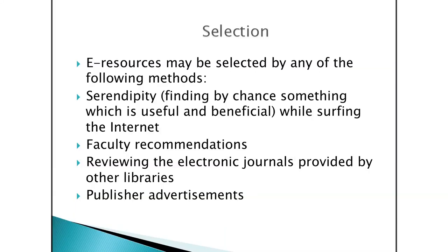How are we managing e-resources? The first point is selection. Selection methods include serendipity — that is, finding by chance something useful and beneficial while surfing the internet — faculty recommendations, reviewing the electronic journals provided by libraries, and publishers' advertisements.